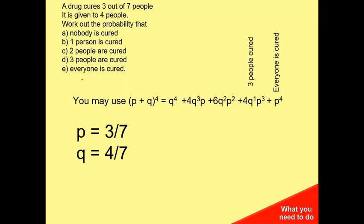So you can work backwards: three people cured, two people cured, one person is cured, and nobody's cured.